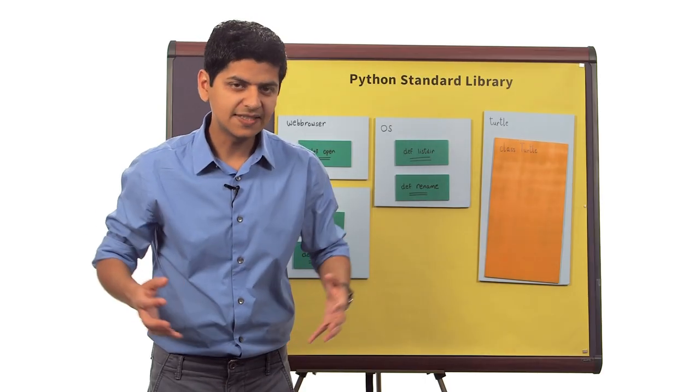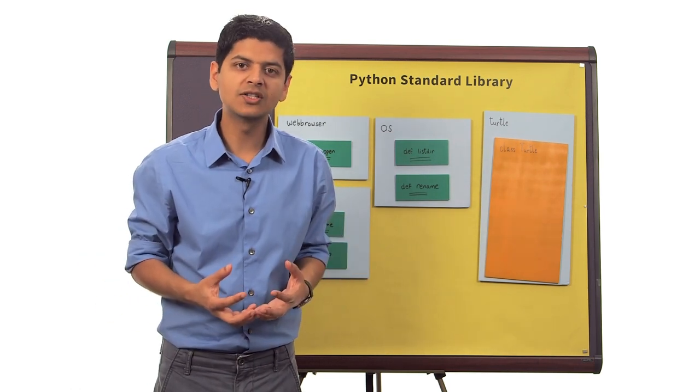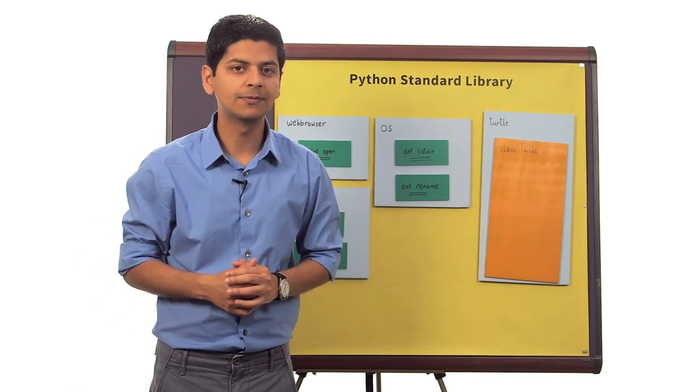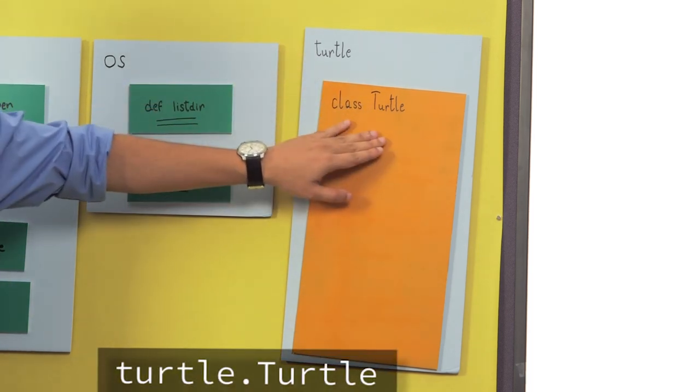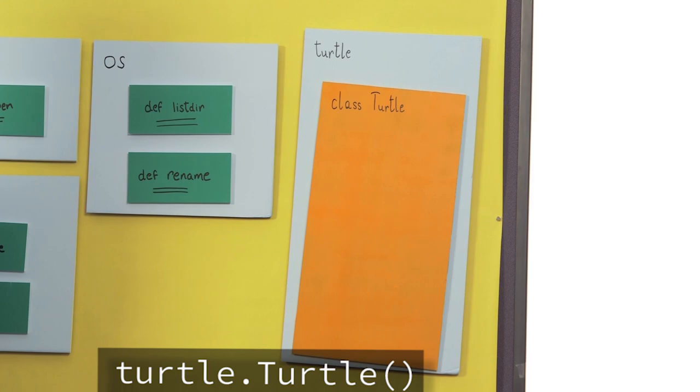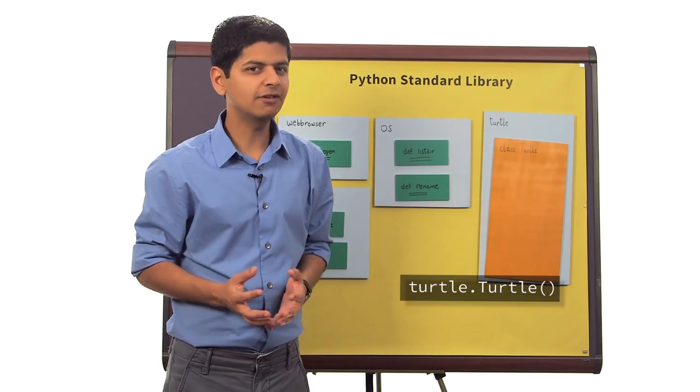For now, you can think of a class as a neatly packaged box that puts things together really well. And it allows us to write code like turtle.turtle with these strange looking brackets, as if we were calling a function.